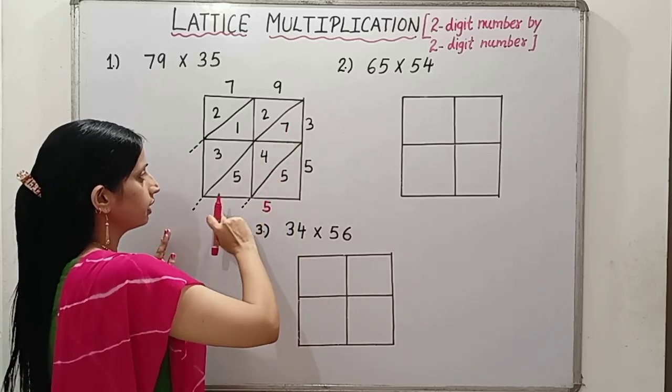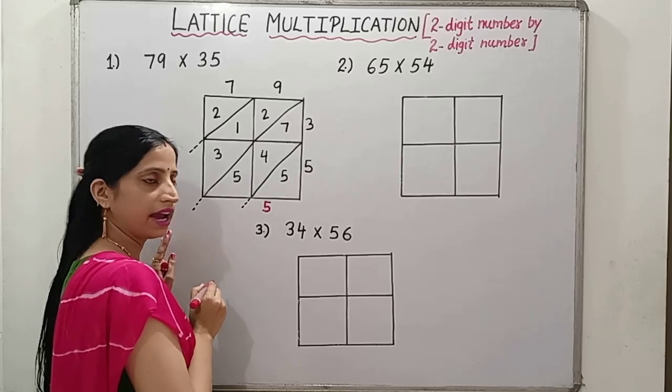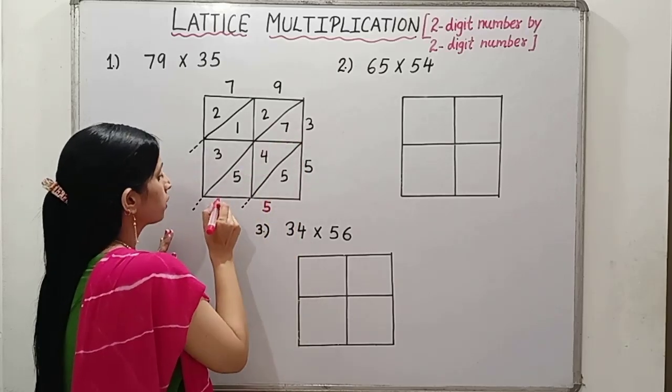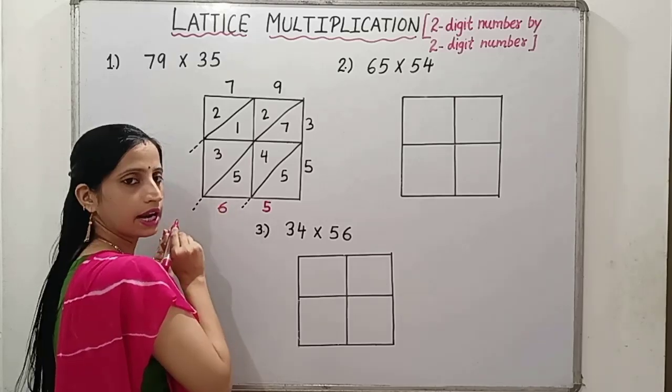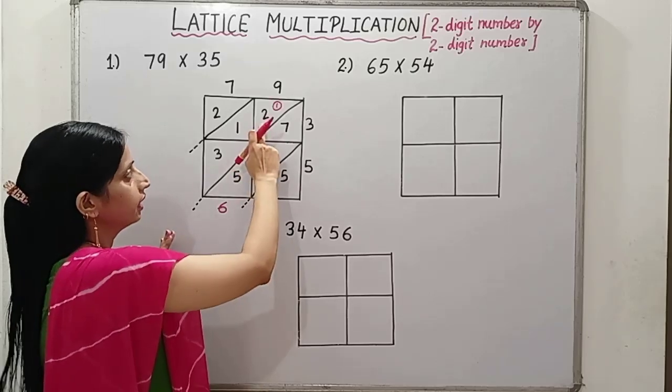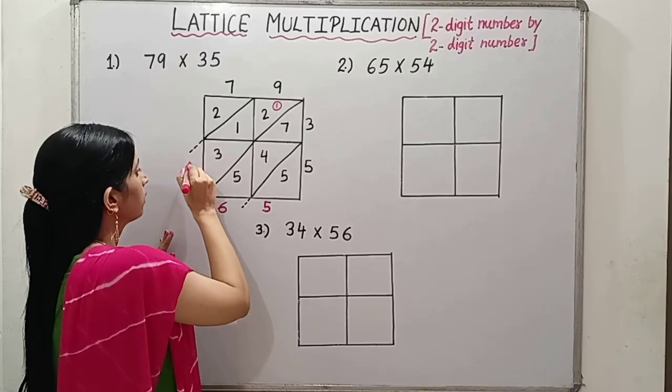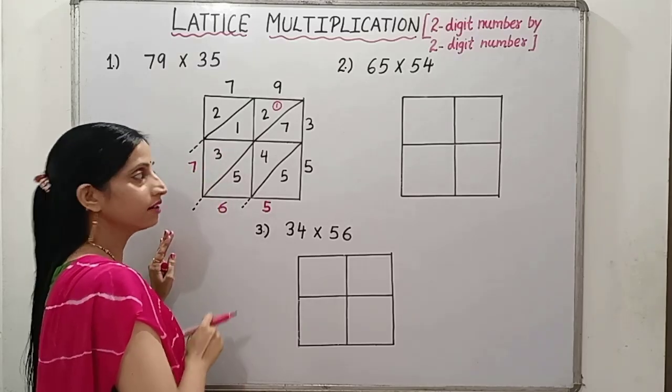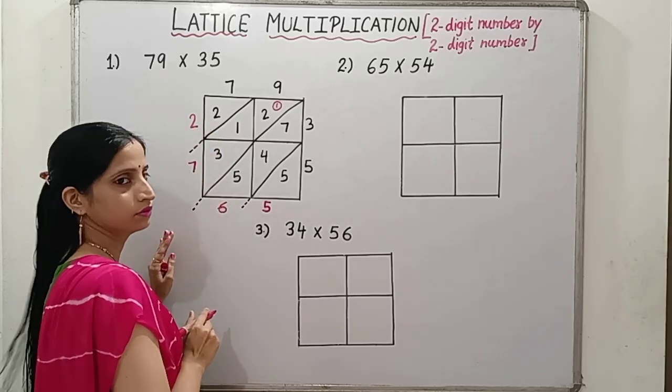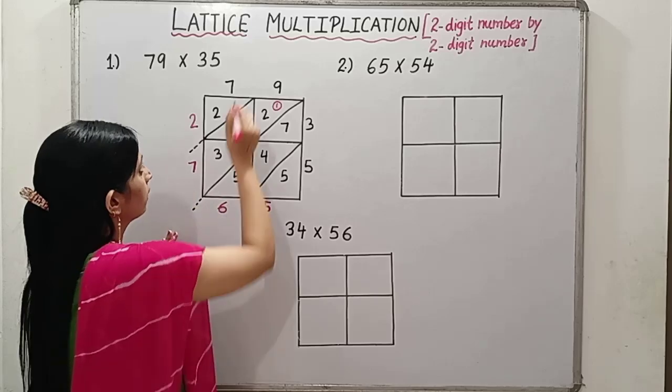In this, you will see that there are 3 numbers. We will add these 3. 5 plus 4, 9. 9 plus 7, 16. So for 16, 6 we will write here, 1 we will carry over to the next diagonal. Then 2 plus 1, 3. 3 plus 1, 4. 4 plus 3, 7. And in this, there is only one number, 2. So our answer will be 2, 7, 6, 5. I hope you are finding this easy.